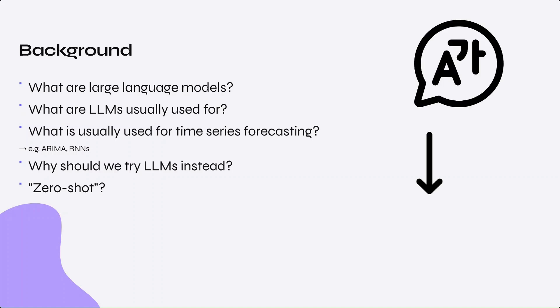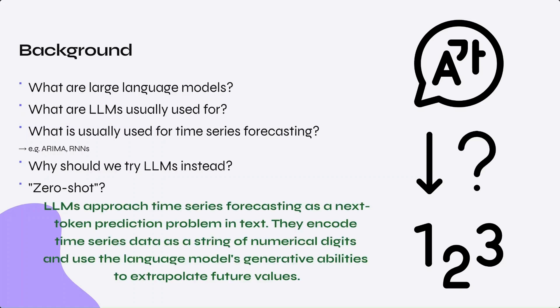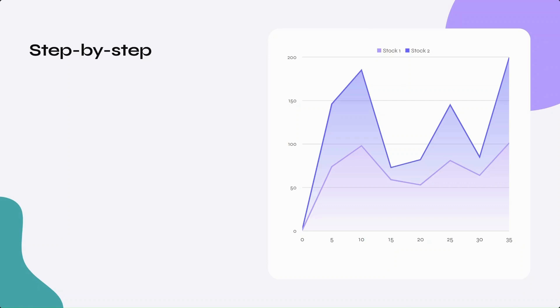So why should we try LLMs? LLMs are zero-shot, meaning they are able to perform a task without specific training or fine-tuning on that task. LLMs can bridge the gap between traditional and modern methods of time series forecasting. They can handle complex and large-scale data like deep learning models, as well as leverage knowledge of patterns learned from text-based training. LLMs approach time series forecasting as a next token prediction problem in text, encoding time series data as a string of numerical digits and using the language model's generative abilities to extrapolate future values.